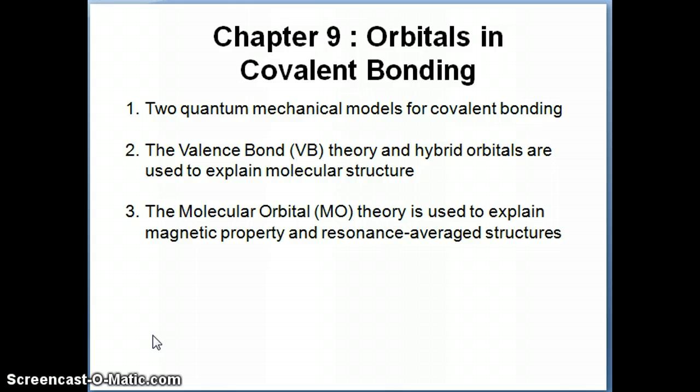We talked about the idea of resonance as well, and that's also something you'll see quite a bit in organic chemistry. Now, what I want to talk about in topic 9 is really to focus on the other aspect of chemical bonds — something that the Lewis model really didn't talk about too much — which is the fact that atoms, as we talked about in topic 7, are modeled using quantum theory, and electrons are modeled as waves.